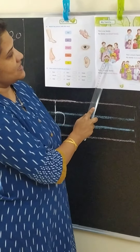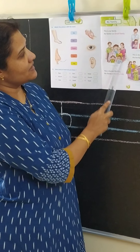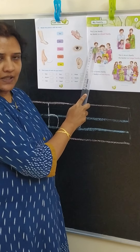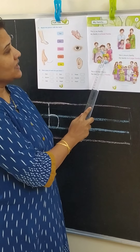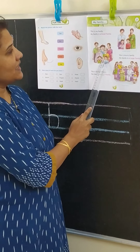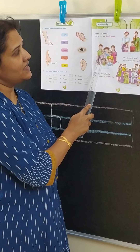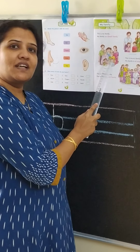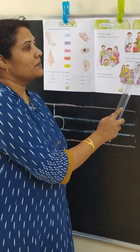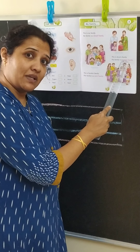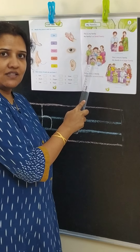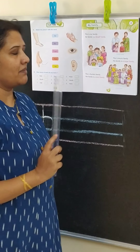Now look at this picture. How many people are there in this picture? There is mother, there is father, there are children, and there is a grandmother and a grandfather. So when you have grandmother and grandfather, it will become a large family. If you are staying with your grandparents, then you have a large family.